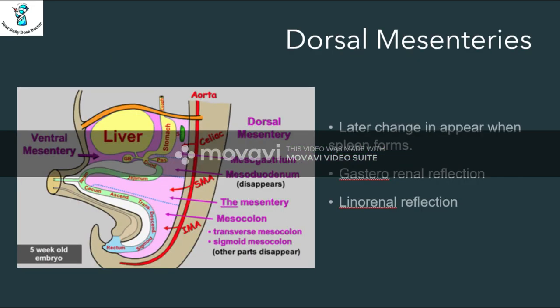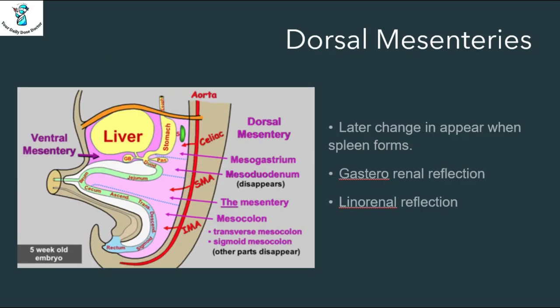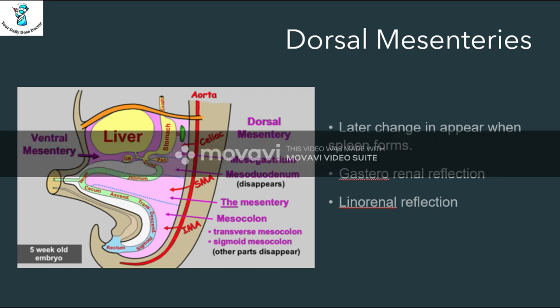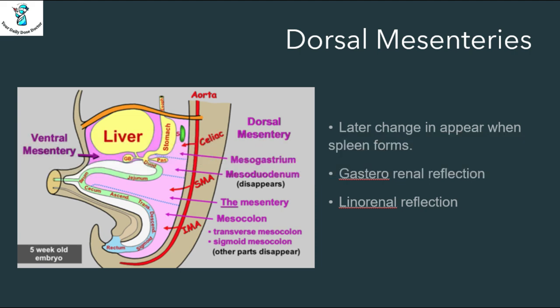The dorsal mesentery initially supports the stomach from the dorsal wall of the body, but later on when the spleen develops, the mesenteries also develop into two parts: one is called the lienorenal reflection and the second one is called the gastrorenal reflection. Thank you so much for watching this video. We discussed the development of the stomach, and in the next video we will discuss the development of the renal system.